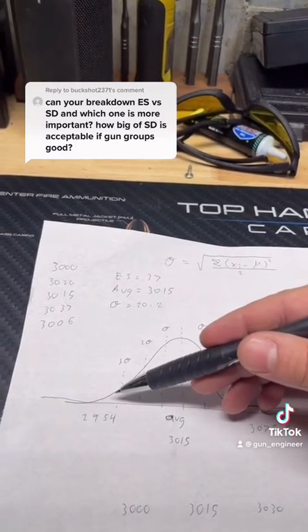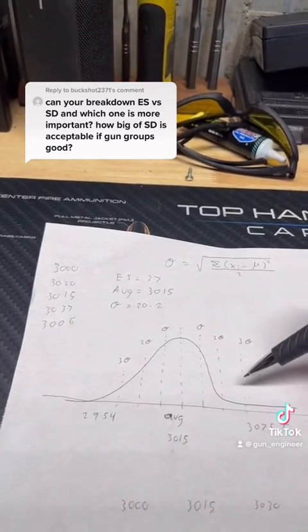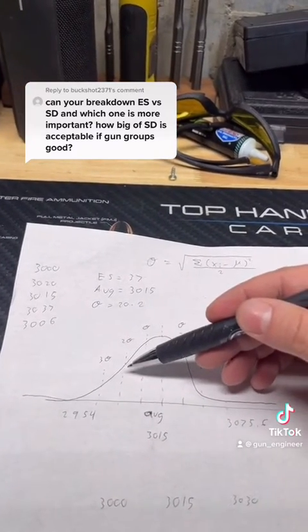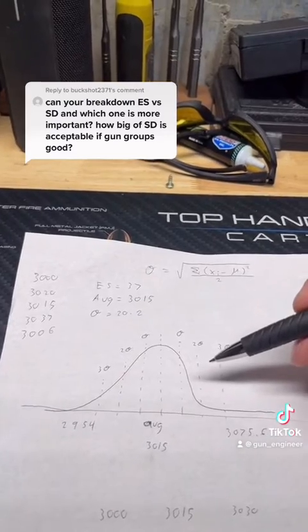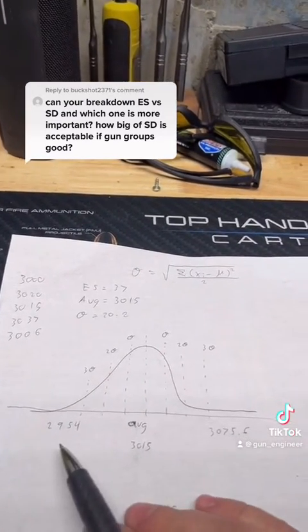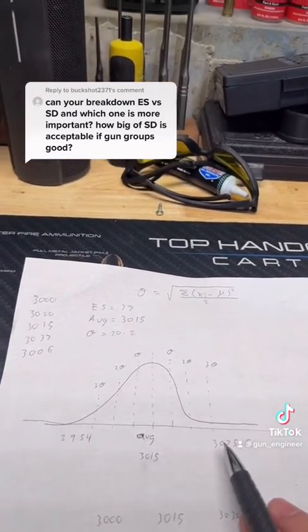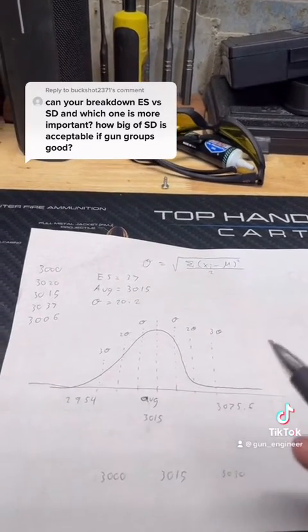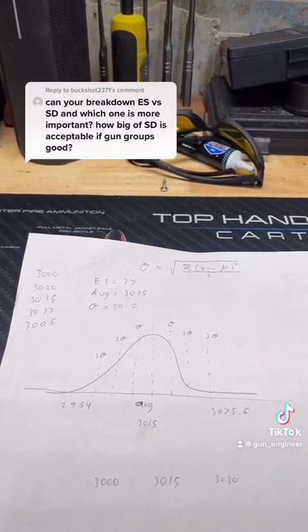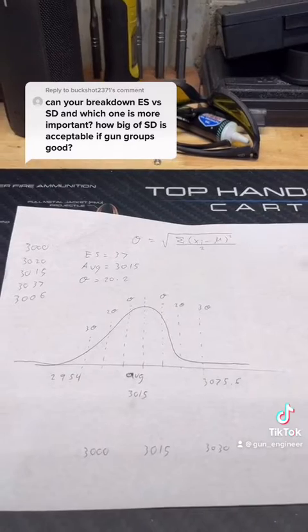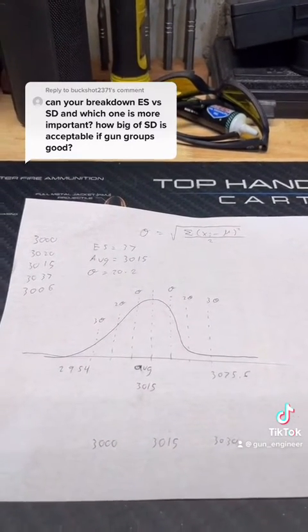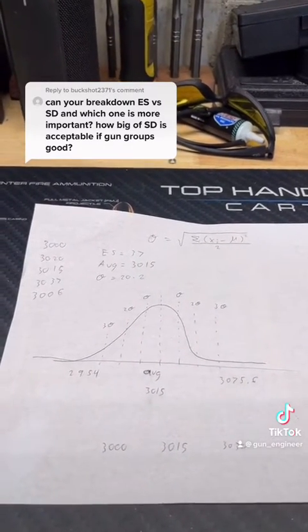So statistically you've got a 99 percent chance that your velocity is going to be in that range. The problem with that is it gives you a potential extreme spread of 120, and when 50 feet per second at a thousand yards can make the difference between eight or ten inches of drop, that starts to be a problem because you just can't maintain consistency with the varying bullet drops.